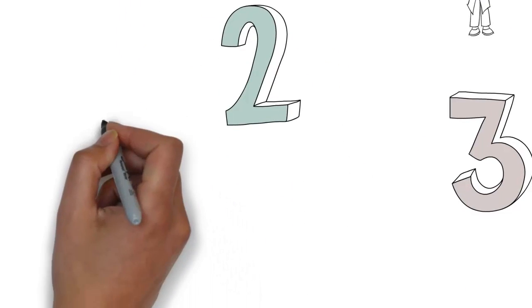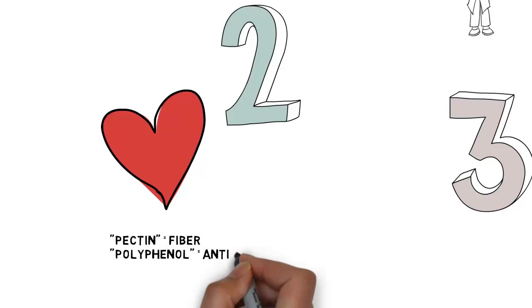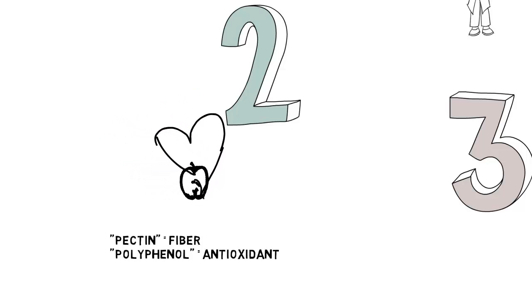Second, apples can help protect against heart disease. Thanks to pectin, which is a type of fiber, and to polyphenols, which are antioxidants, researchers report that daily consumption of apples may help reduce the damage caused by the bad type of cholesterol and protect against heart disease. To maximize this benefit, eat the peel. Apple skin has two to six times the antioxidant compound as the flesh.